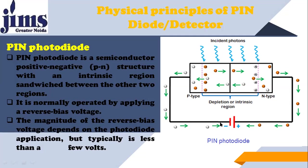This is reverse biasing because we don't want current from the battery; we want current because of photons — photocurrent rather than normal diode current. That's why we use reverse biasing. The intrinsic region is a very vast region because we insert that layer, so the depletion region is very wide and photons are incident in that region.